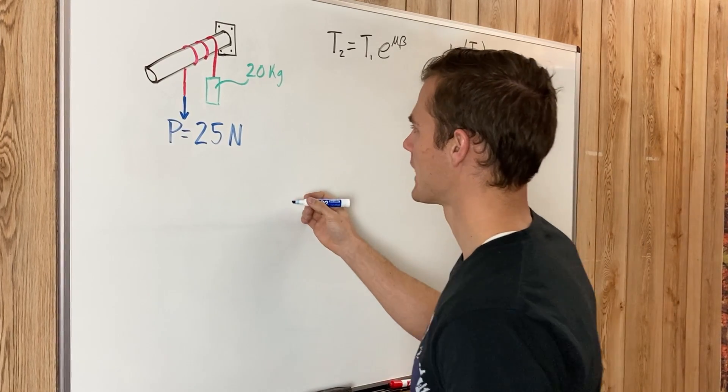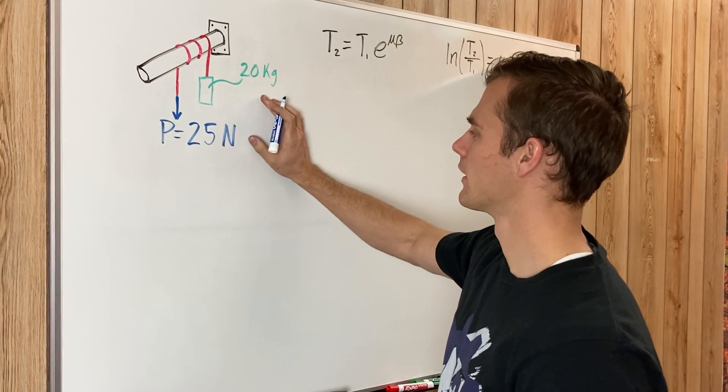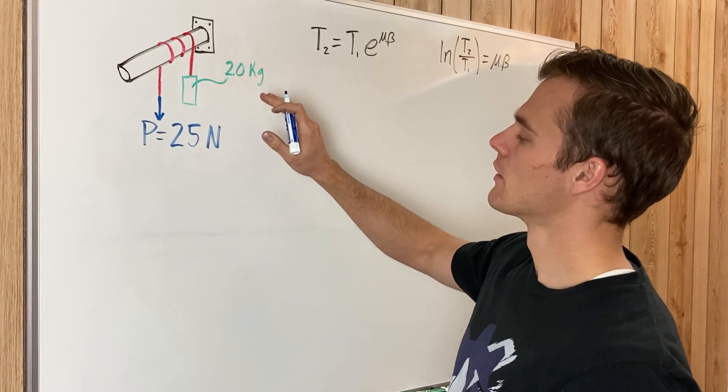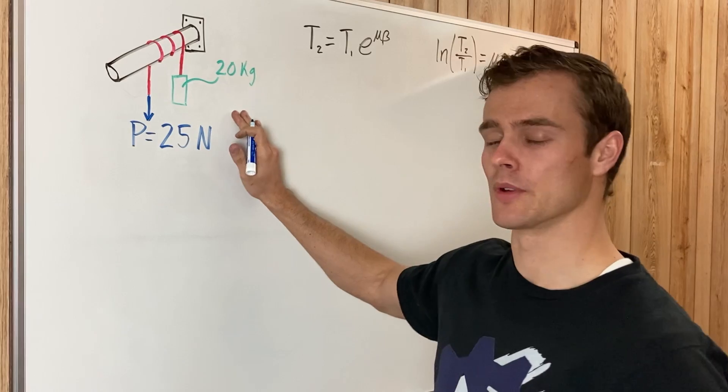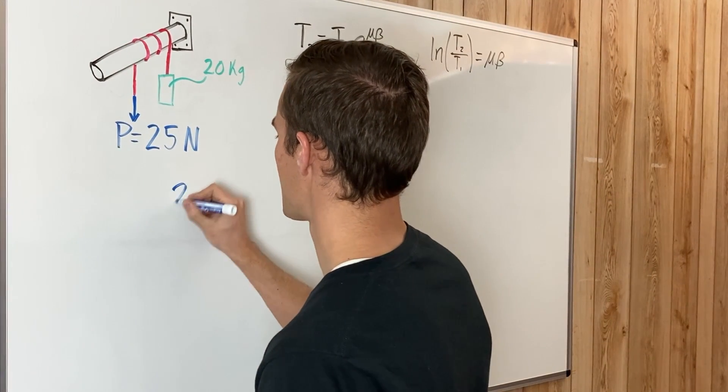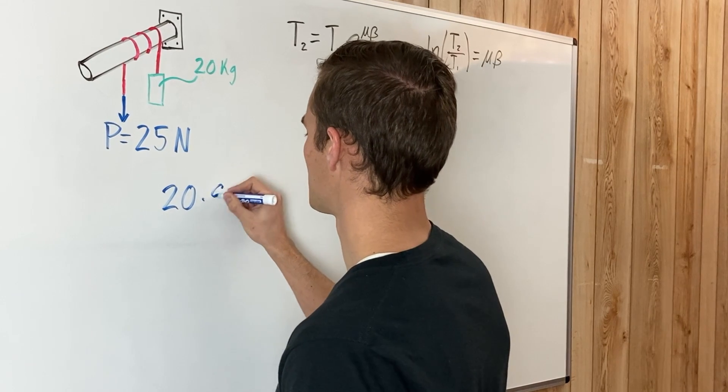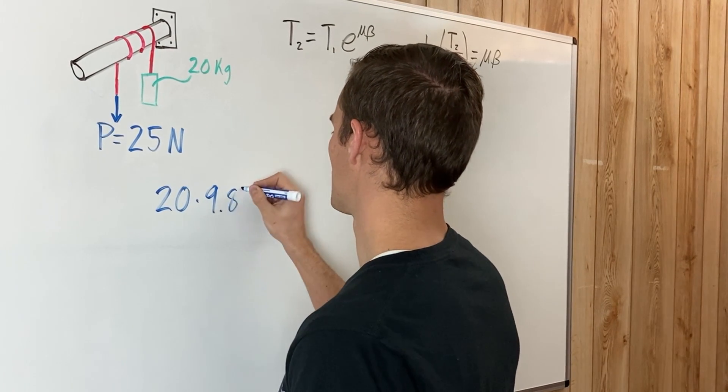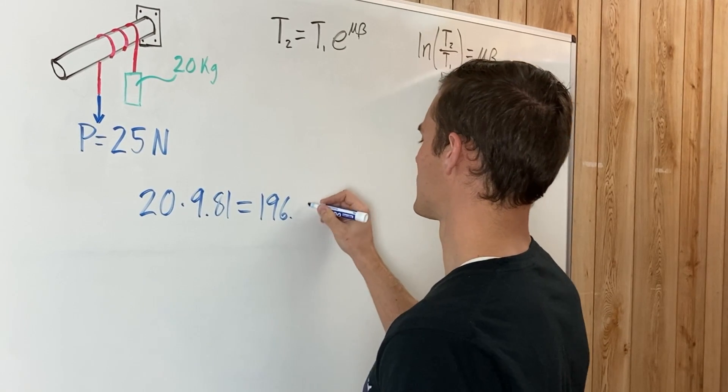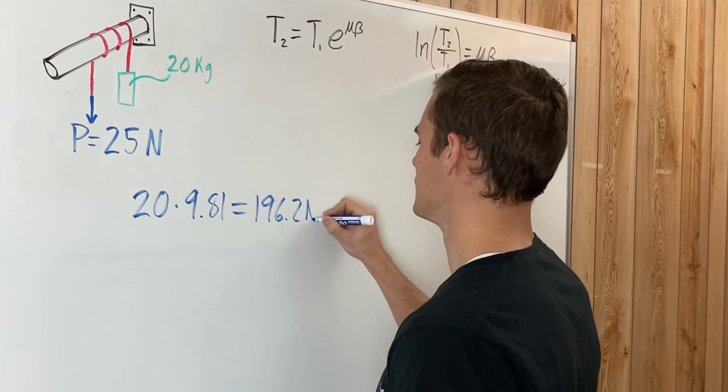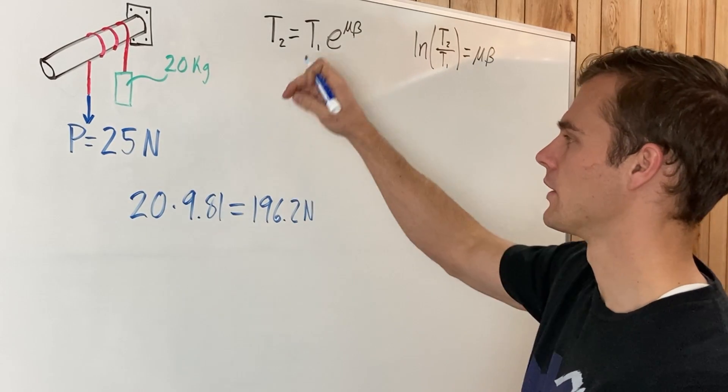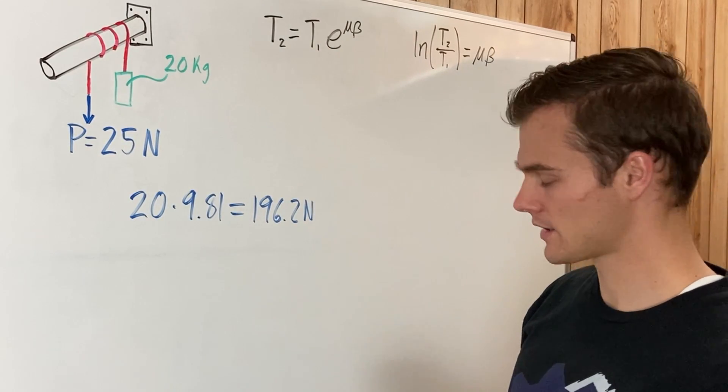But one thing we can check is whether the P of 25 newtons is bigger or smaller than the force pulling down of gravity. So we need to convert that from a mass to a force. So that'll be 20 times by 9.81. And that equals 196.2 newtons. So that is the force of gravity, or that is gravity pulling down on that weight.